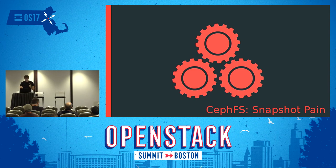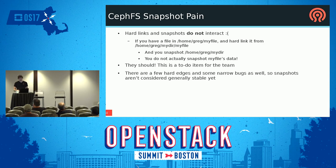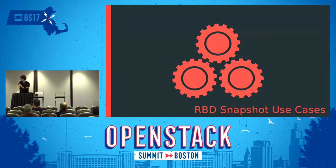There are also pain points in CephFS snapshots. Hard links and snapshots do not interact correctly yet — if a file is hard-linked from outside a snapshotted directory, the snapshot won't capture the correct state. It's known how to fix it but was deprioritized behind multiple active MDS work. There are also some edge-case bugs with certain feature combinations. Snapshots aren't considered generally stable in CephFS yet — they weren't marked stable in Jewel and it's uncertain whether they'll be in Luminous.